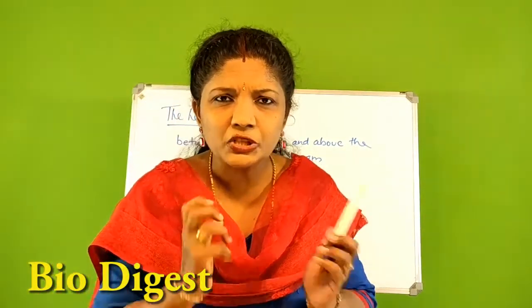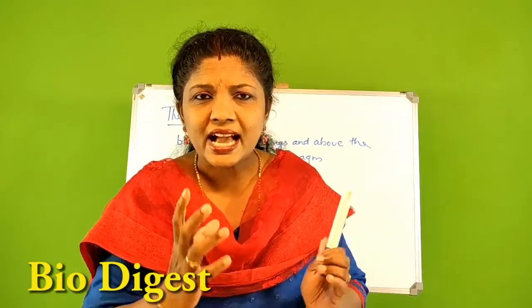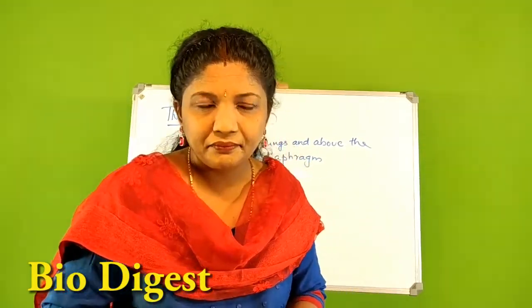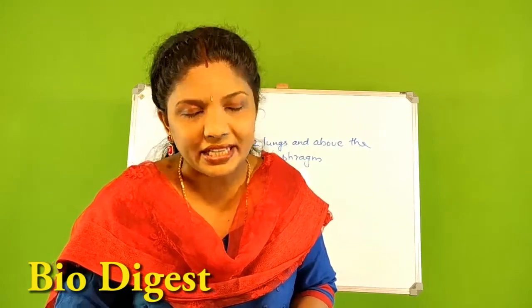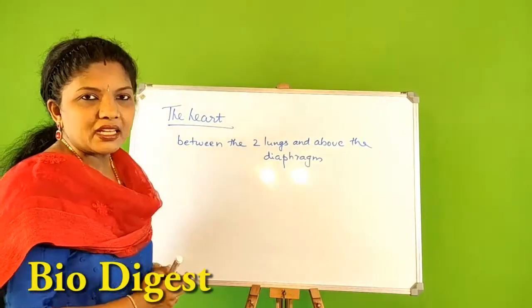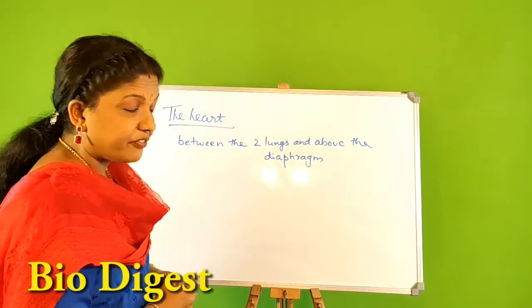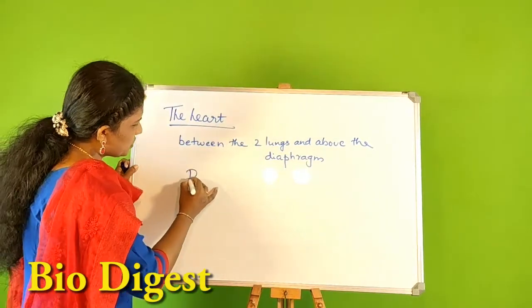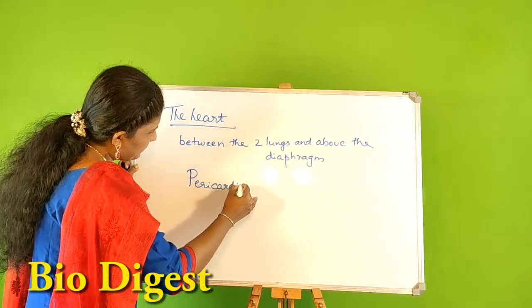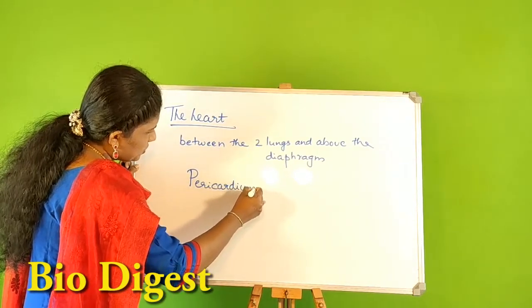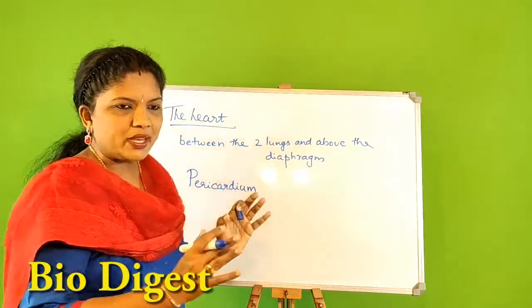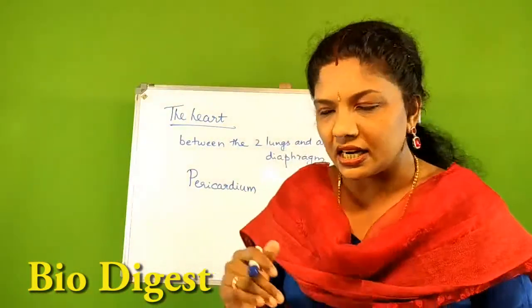The heart is actually a very delicate organ, so it needs protection. It has a two-membranous protective covering, which is called the pericardium. Pericardium is a double membranous covering that provides protection to the heart.